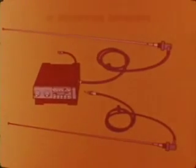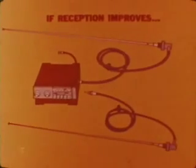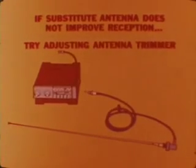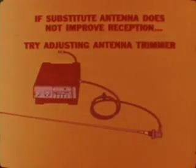Next we look at some of the causes of weak reception. Since radio reception begins at the antenna, we check it out by plugging in a substitute unit. If reception improves, it could mean that the car antenna is faulty. If the substitute antenna does not improve reception, then try adjusting the antenna trimmer in the radio. In any case, the car antenna should be checked and the trimmer adjusted before the radio is blamed for weak reception.